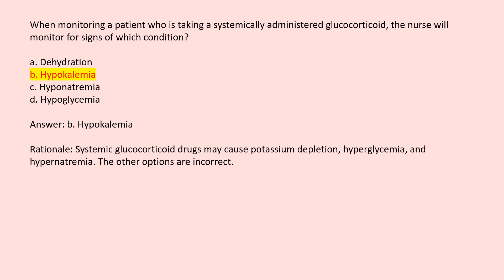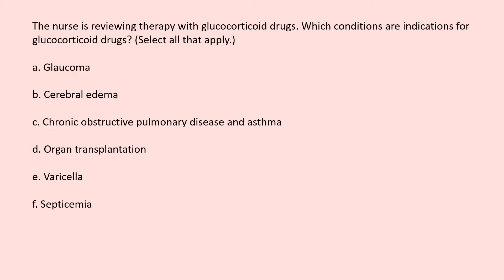Answer B. Hypokalemia. Rationale: Systemic glucocorticoid drugs may cause potassium depletion, hyperglycemia, and hypernatremia. The other options are incorrect.